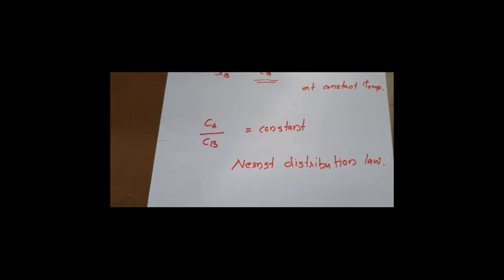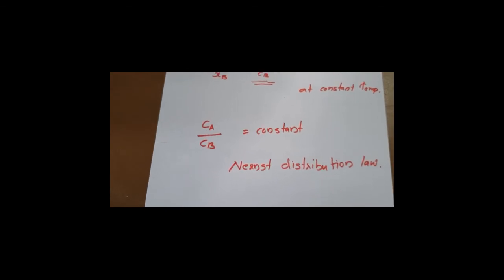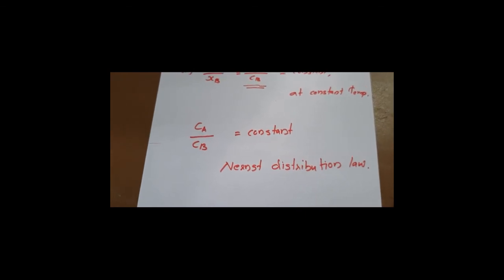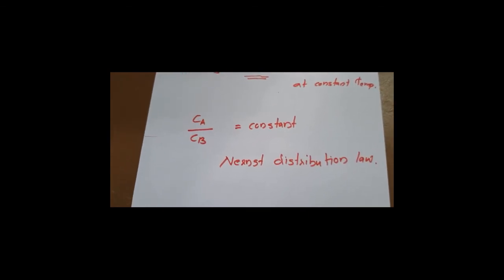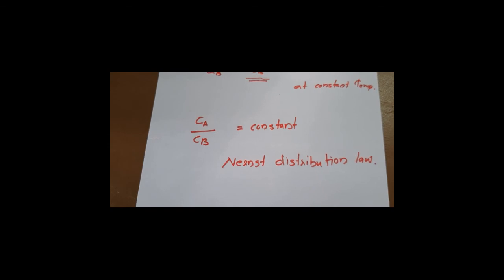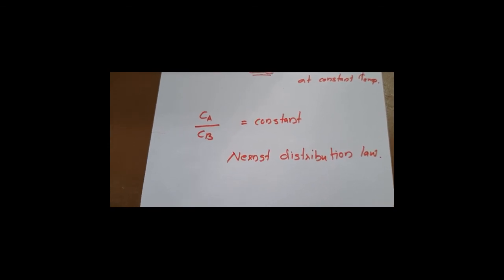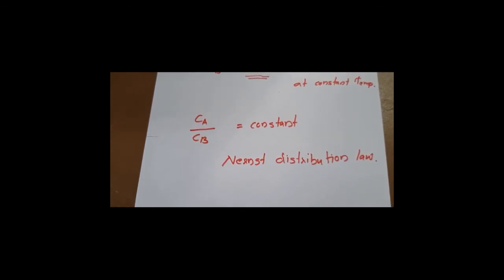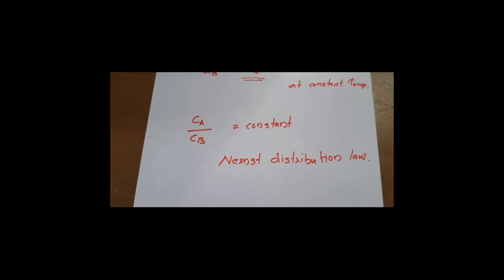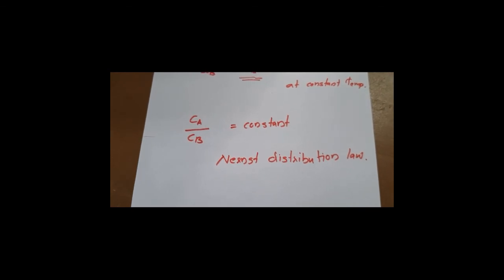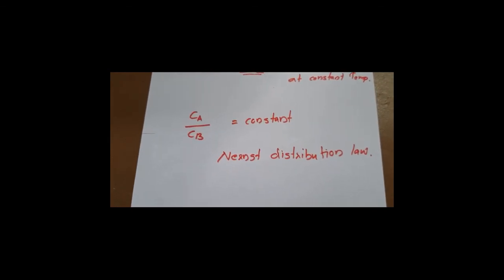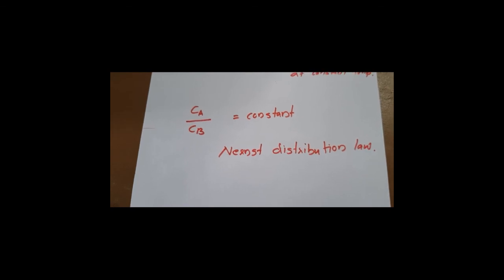This is the thermodynamic derivation of Nernst's distribution law. Starting from the chemical potentials μA and μB of a solute in two immiscible solvents, and using the equilibrium condition μA equals μB, we derived that the ratio of concentrations of the solute in the two immiscible solvents is equal to a constant.